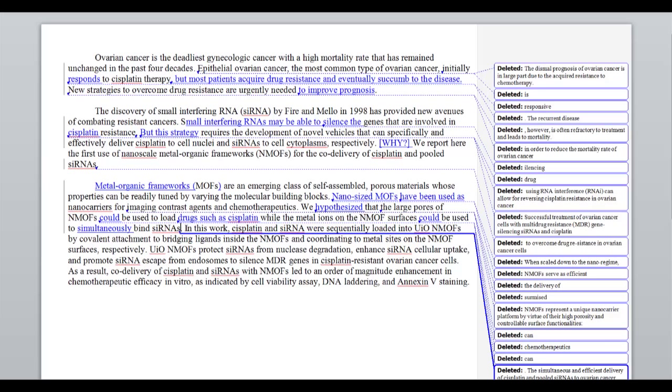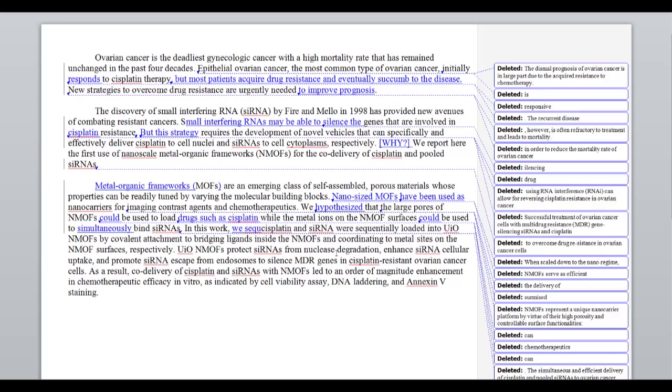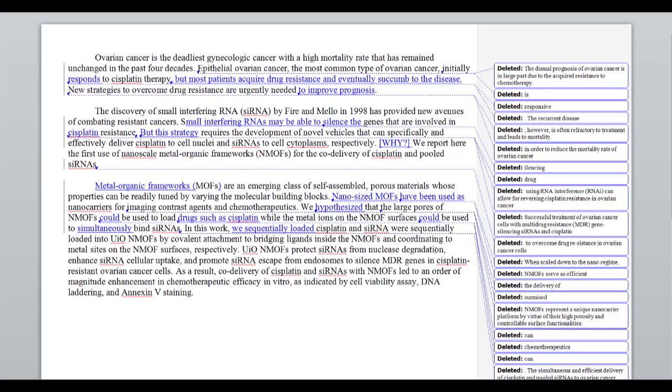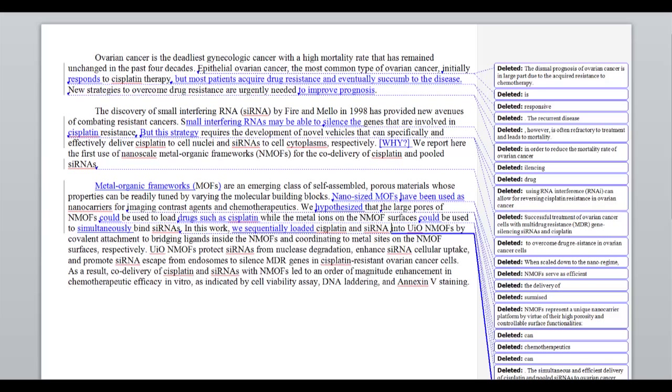Next we get, in this work, cisplatin and siRNA were sequentially loaded into UIO NMOFs. Notice that's passive voice. They were sequentially loaded. Let's turn it into active voice. In this work, we sequentially loaded cisplatin and siRNA. Now we get into UIO NMOFs. Okay, I don't know what UIO stands for. That acronym has not yet been defined. So just to note to the author, I'm going to bold that. Also I'd recommend to the author that we've got a little bit of alphabet soup going on here. We've got siRNA, and there's too many acronyms going on. Maybe we could just write that one out, I might suggest to the author, or at least they need to define it. So, in this work, we sequentially loaded these two things onto the NMOFs.